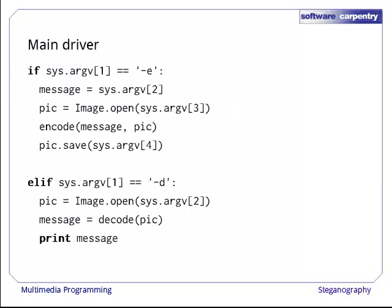The main driver for our program looks like this. If the first argument is "-e", then the second is the string we want to put in the image, the third is the image we're hiding it in, and the fourth is where to save the output. Remember, the zeroth command line argument is the name of the program itself. If the first argument is "-d", on the other hand, then there's only one other argument, the name of the image file containing the secret message that we're to extract.